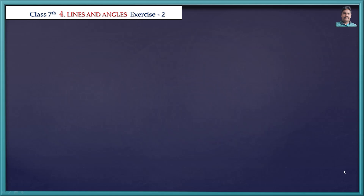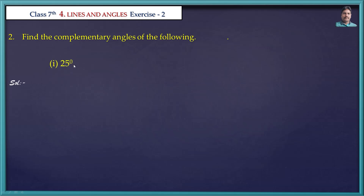Go to the next problem: Find the complementary angles of the following. First one: 25 degrees. The complementary angle of 25 degrees is 90 minus 25, which is equal to 65 degrees. So 65 degrees is the complementary angle of 25 degrees.